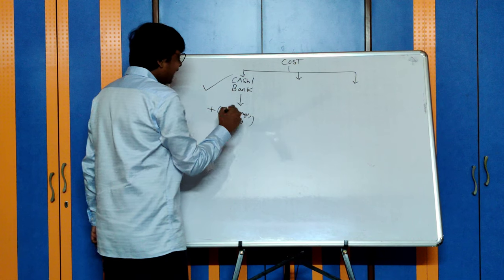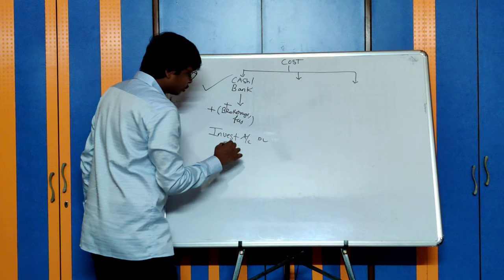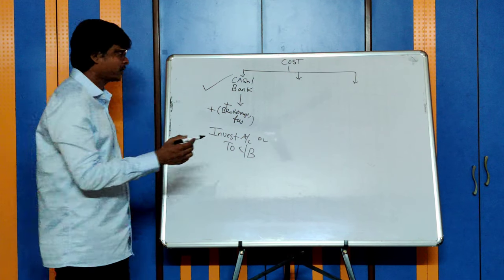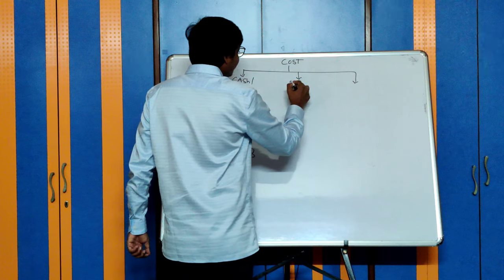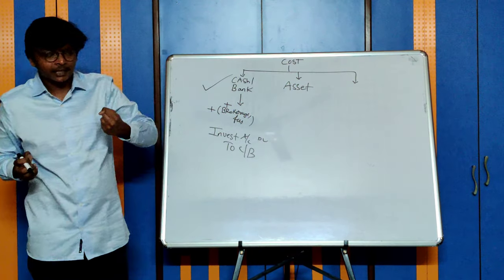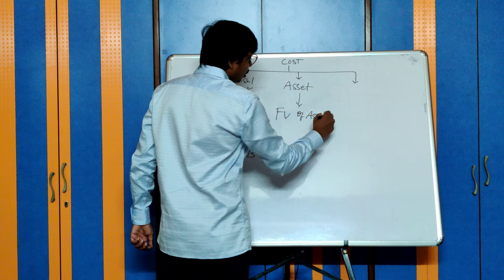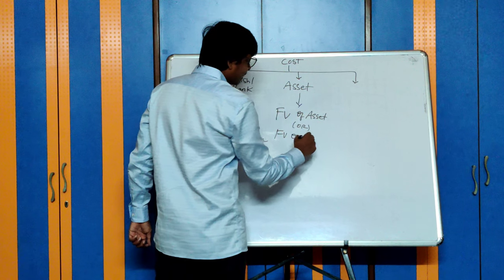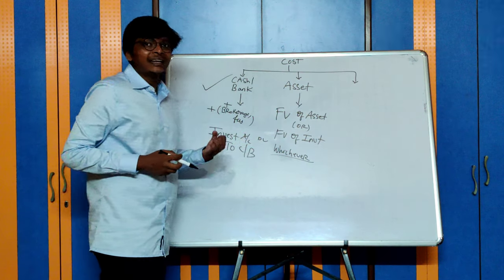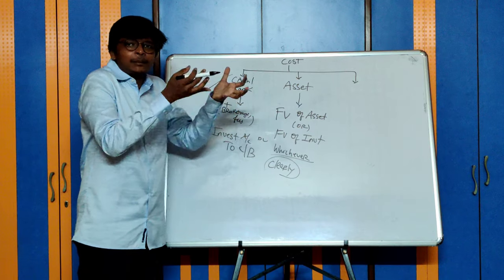It depends on how you are purchasing. If I am purchasing by paying cash or bank, then your cost will be the entire amount paid plus any brokerage charges or fees — add all this to your cost of investment. The entry will be investment account debit to cash or bank. Let's say you purchase an investment by exchanging an asset — you gave an asset and received an investment. In that case, your cost will be the fair value of the asset given or fair value of the investment received, whichever is more clearly evident.